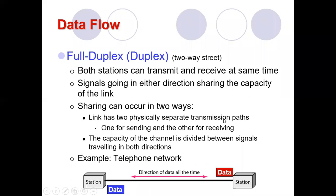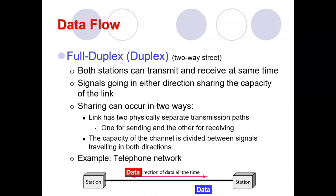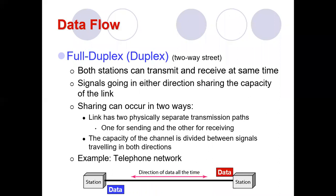The link can have two physical separate transmission paths — one for sending and one for receiving. Alternatively, both devices can use one communication line for data transmission in both directions, with the capacity of the channel shared. We can have a separate channel for sending and a separate channel for receiving, but the capacity will be shared either way.